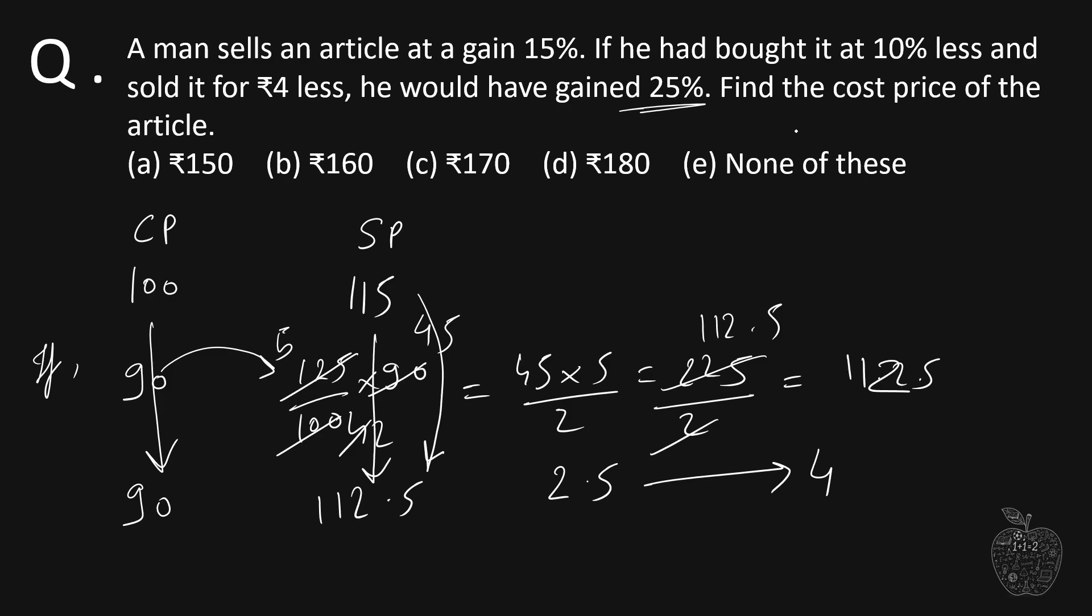And the question is asking us to find the cost price of the article. If 2.5 is 4, then what is the cost price? Cost price is 100. So if 2.5 is 4, what will 100 be? We do cross multiplication: 2.5 divided into 100. Adding another 0 removes the decimal.